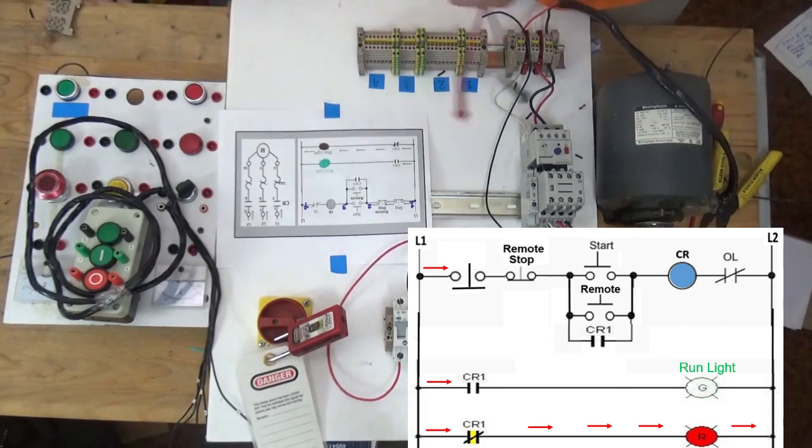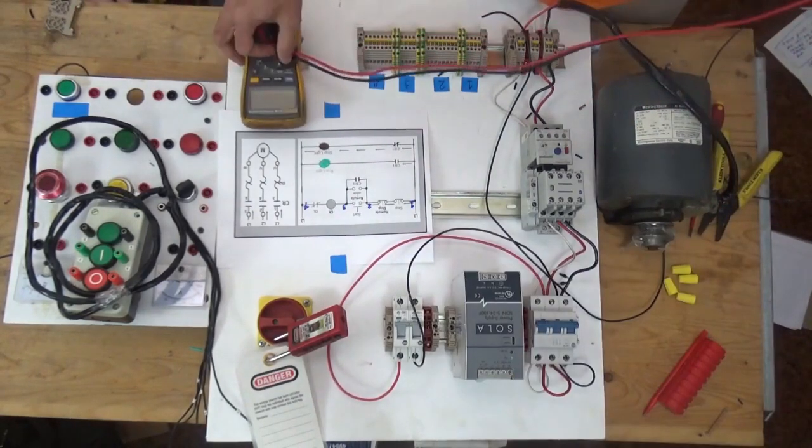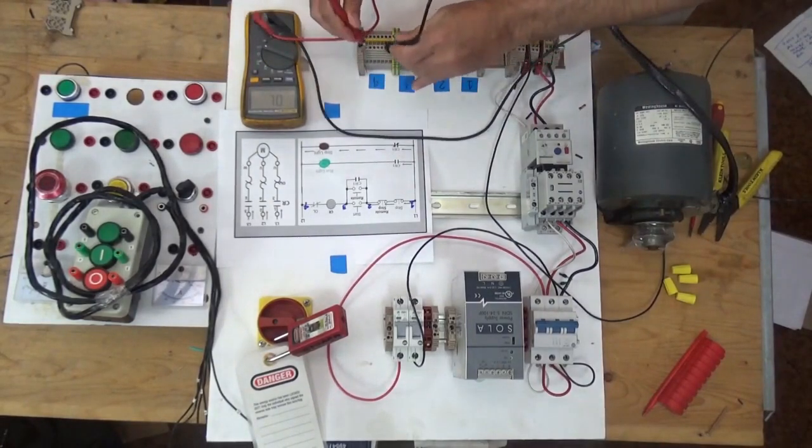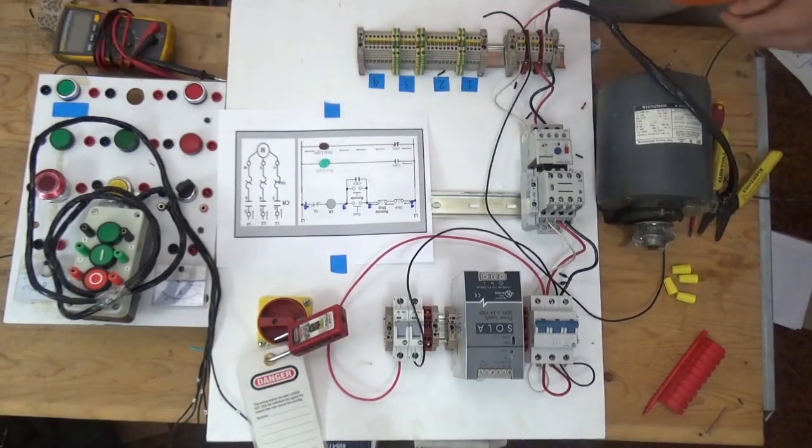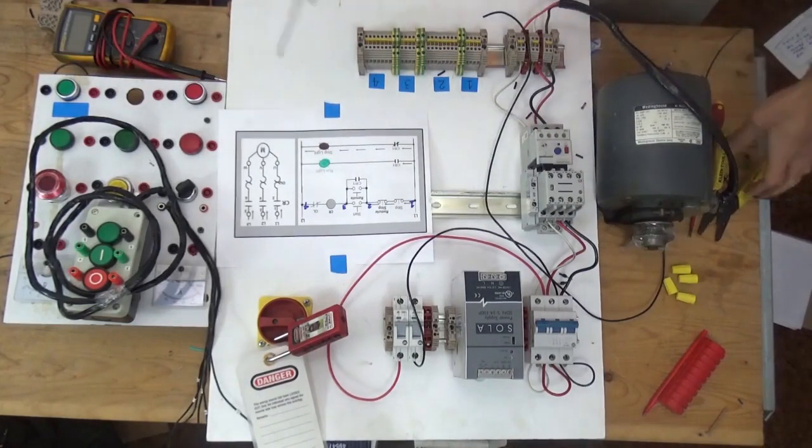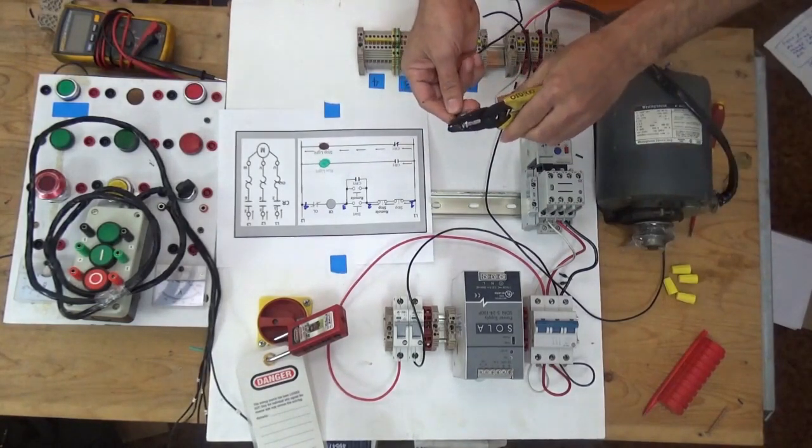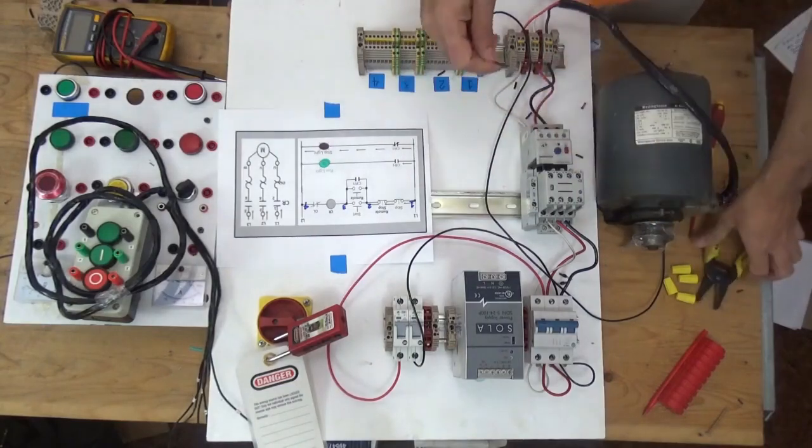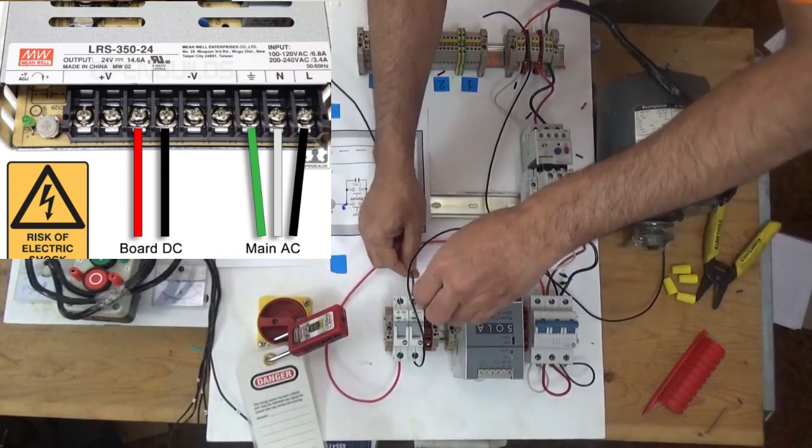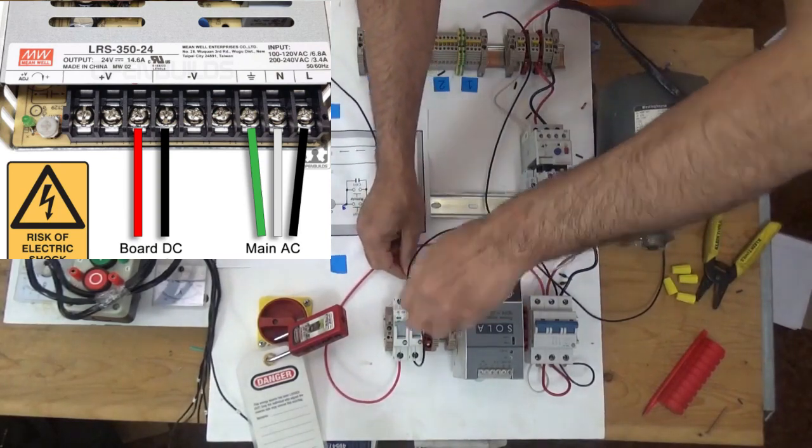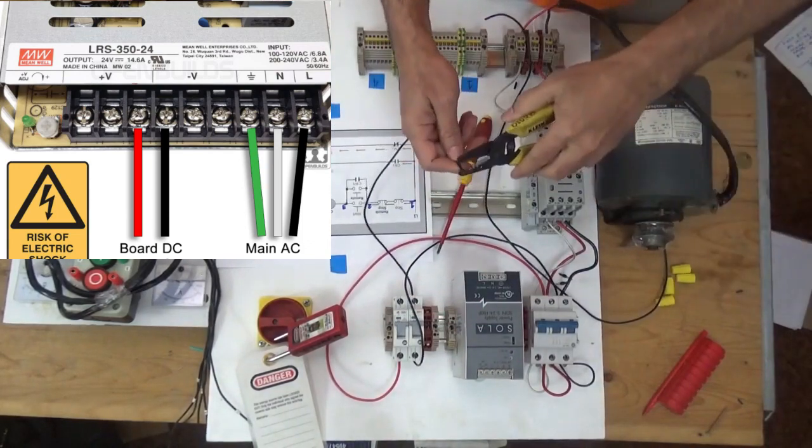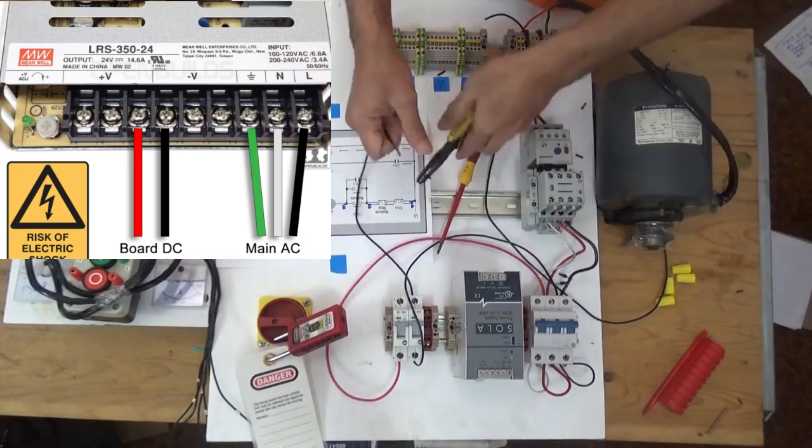This is bridged, which means it is connected. I will show you, see this one here. From our control circuit breaker going to our 24 volts power supply.